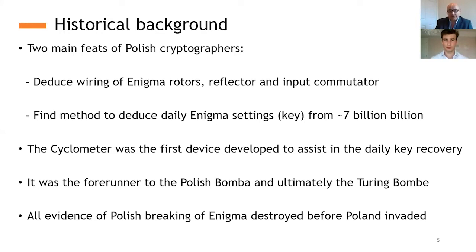And in the early 1930s, the key space that is the total number of ways you could set the Enigma up was about 7 billion billion ways. So any thoughts of some kind of brute force attack, you know, we'll just try configuring it one way after another, typing a bit of text and see if anything sensible comes out. That's not going to work. And so the Polish cryptographers had to come up with ways that could deduce the daily Enigma settings quickly enough for them to then decrypt all the communications they listen to and make sense of them. And so the cyclometer was the first ever device developed to assist in this process of daily key recovery.